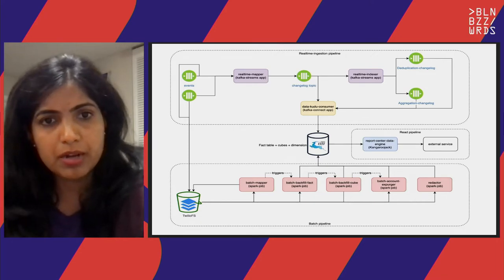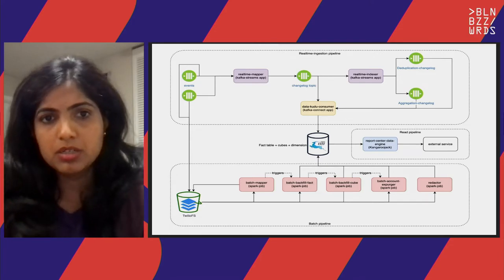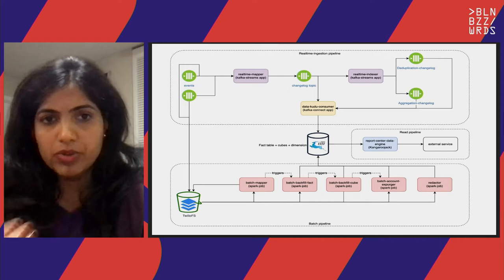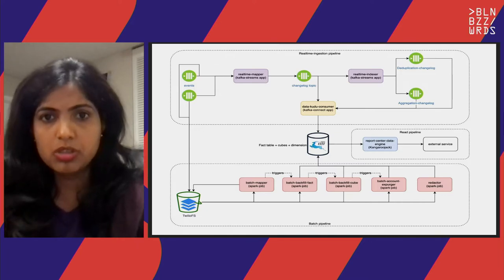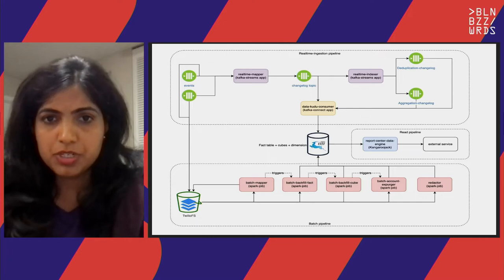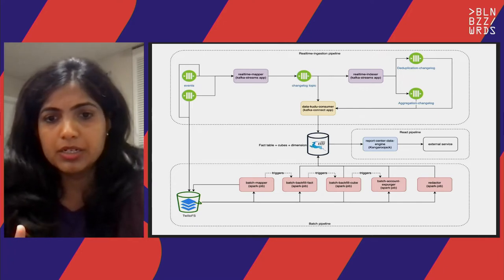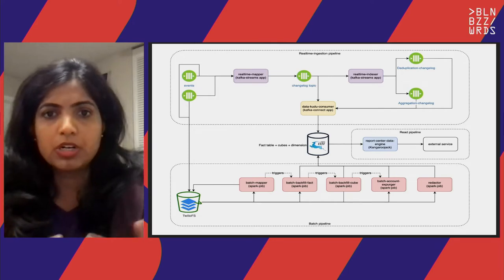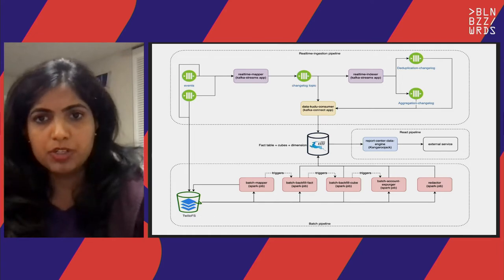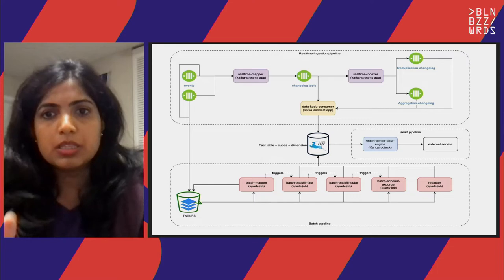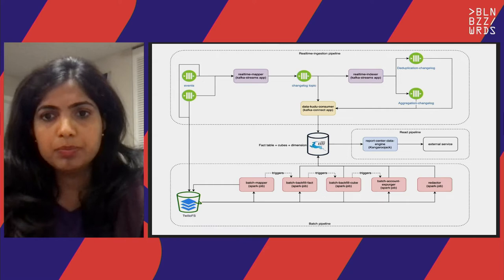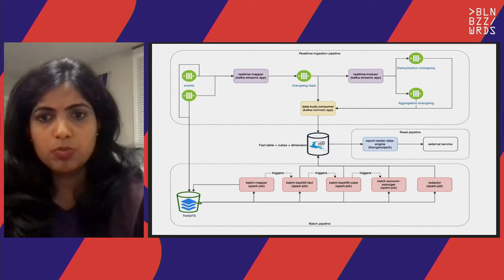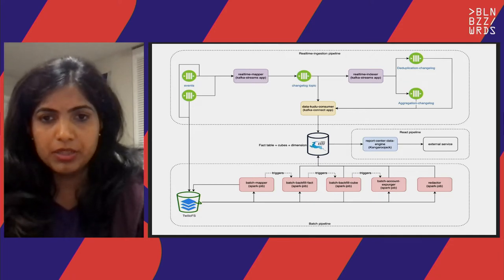The green circles represent the Kafka topics where we get raw events from our customers. Those raw events are sent to a real-time mapper, which is a Kafka Streams app that does simple transformations like converting an event into an object format or cleaning up the data. After transformation, it writes to a changelog topic. The events from the changelog topic are then processed by a Kafka sink connector — the data Kudu consumer Kafka Connect app — and the raw events are written in a tabular format in our database in the fact format.